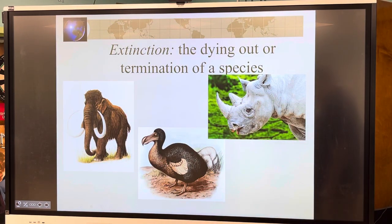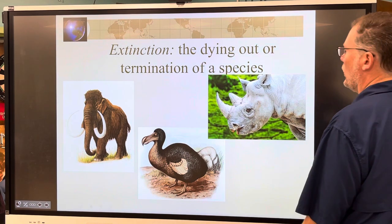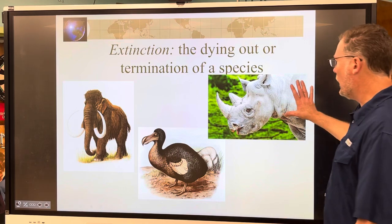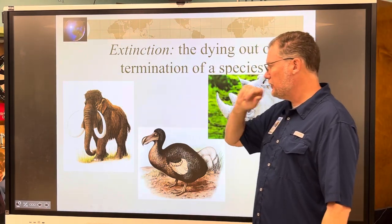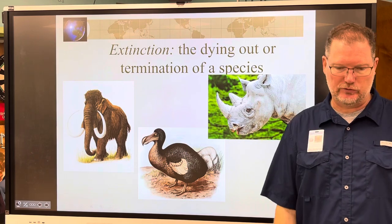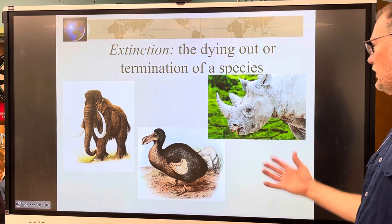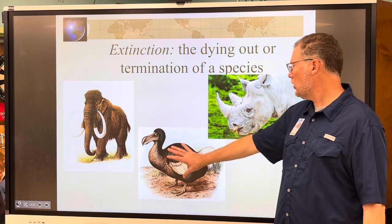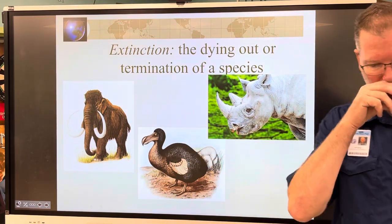Now we're on the back page. Extinction is the dying out or termination of a species. Recent examples from the last ten thousand years, a few hundred years, or even this century include the white rhino, the woolly mammoth, and the dodo bird.